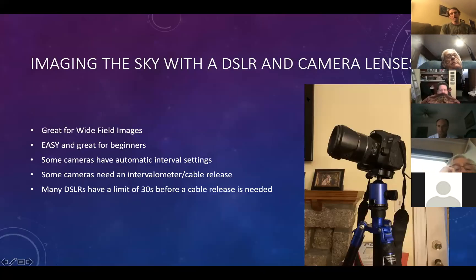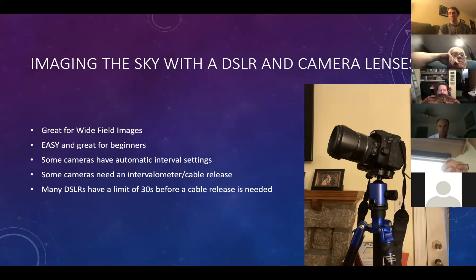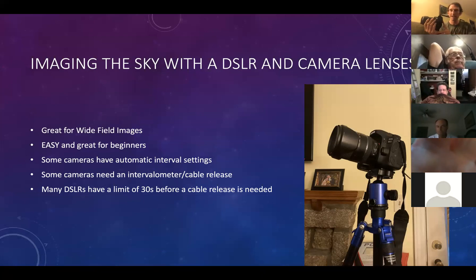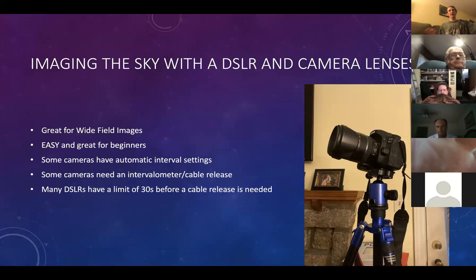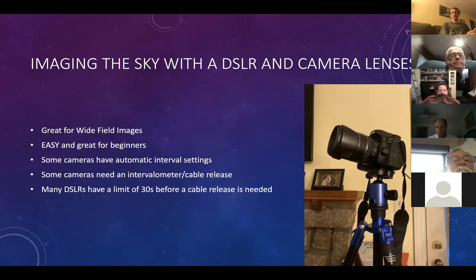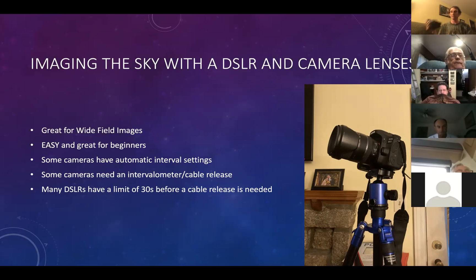To get started, you can image the sky with some very cheap stuff. Your images will be different from those with more advanced setups, but you can get some really good images with basic equipment. A basic DSLR camera, simply put on top of a tripod, can give you really great wide-field images. You just literally take your DSLR, slap it on a tripod, and open the shutter for a little while.